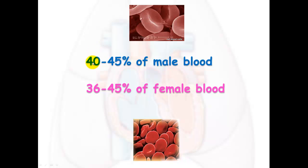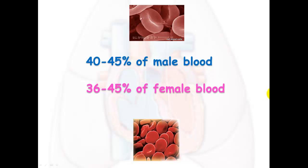Red blood cells make up about 40 to 45 percent of male blood and slightly less in female blood — about 36 to 45 percent. This is because males need more oxygen due to having a higher metabolism.